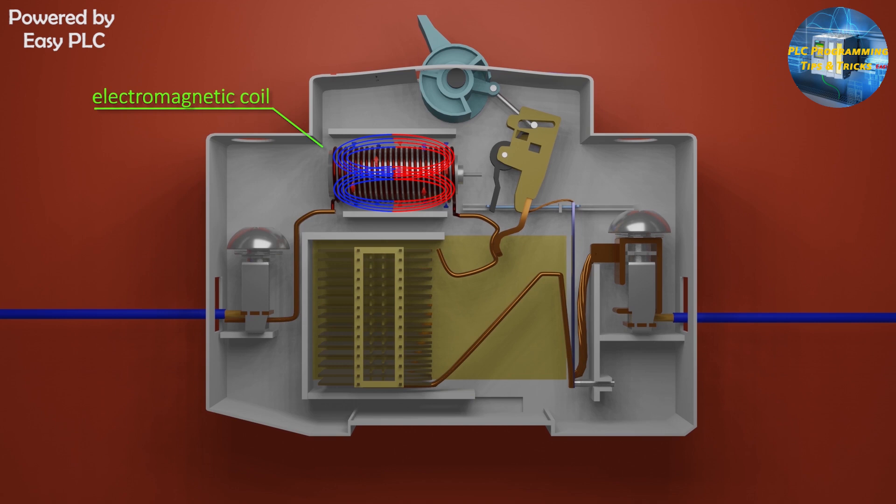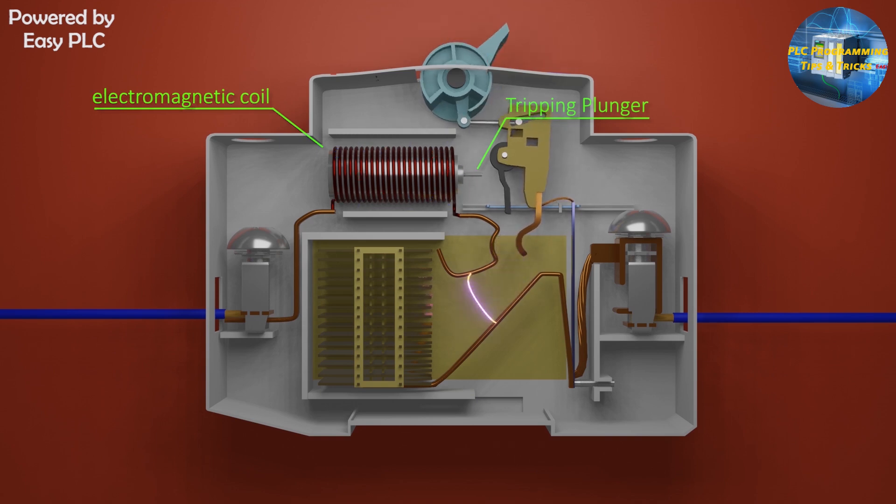But in the case of the short circuit on the load side, a large current passes through the coil and it produces a very large and strong electric field around the coil. Because of this magnetic field, the plunger inside the coil moves outwards and hits the tripping mechanism. You can see that the tripping lever is in the black color. Because of this action the operating mechanism moves backwards and MCB trips and cuts the current path.